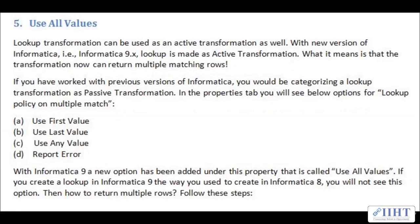Now let's look at the 'use all values' option. Previously we learned that the lookup transformation is a passive transformation, but it can also be used as an active transformation. With Informatica 9.x, the lookup is made an active transformation, meaning it can now return multiple matching rows. In previous versions of Informatica, you would only see four options: use first value, use last value, use any value, or report error. With Informatica 9, a new option called 'use all values' has been added. We will look at an example in the next video and see how to enable this active transformation property.